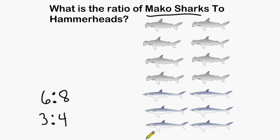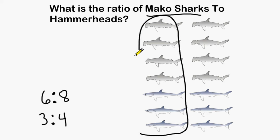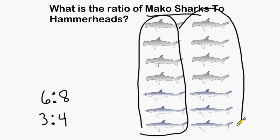We can see that in this group right here we have exactly 3 mako sharks for every 4 hammerhead sharks, as we do in this group as well. Also notice that we have 2 groups with identical contents, each with 3 mako sharks and 4 hammerhead sharks.